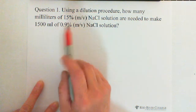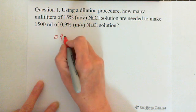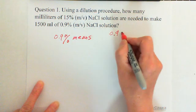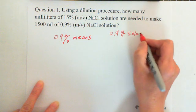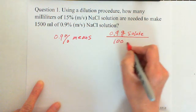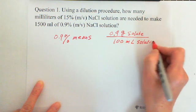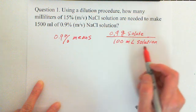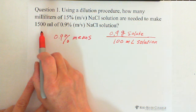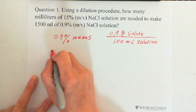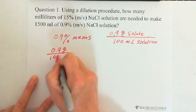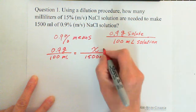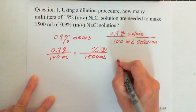0.9% means there are 0.9 grams of solute in 100 milliliters of solution — that's the percent: 0.9 grams of solute over 100 milliliters of solution. Now we need to make 1500 milliliters of solution. That's why we can set up the ratio for 0.9% solution: we need 1500 milliliters of solution, so we find how much solute that contains.